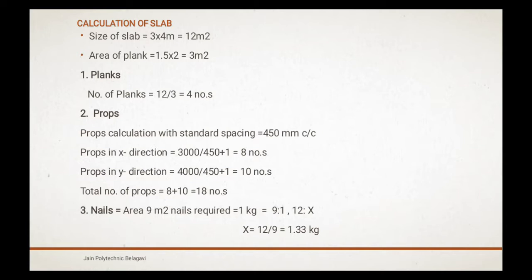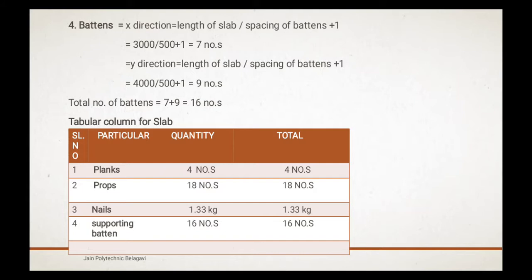Battens: we are going to calculate x-direction and y-direction. The battens formula is length of slab divided by spacing of battens plus 1. We are getting x-direction battens is 7 numbers and y-direction battens is 9 numbers. Total number of battens is 7+9, so 16 numbers.